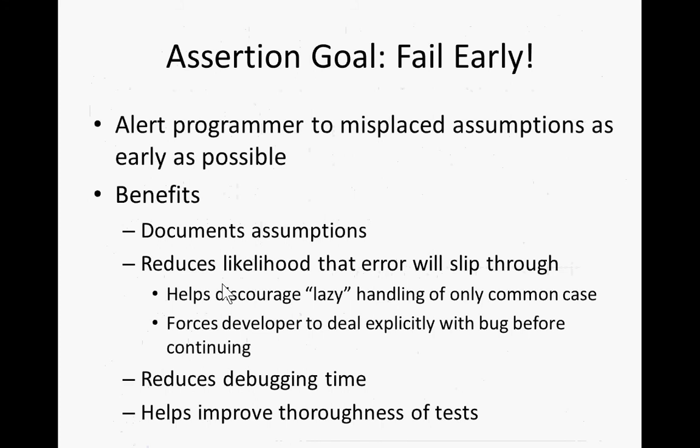What Dylan is speaking about is this notion of assertions: they operationally encode your assumptions, they test your assumptions, and they also document your assumptions to yourself and others in the future. When someone looks at that, they say, 'oh, they're assuming this in this subsequent code,' which is helpful for communication. At an operational level, it will keep you honest — it will help avoid lazy handling of only the common case and force developers to deal explicitly with the problem. It will alert you if your assumptions are off as quickly as possible, helping you diagnose what could otherwise be a very difficult-to-diagnose bug.